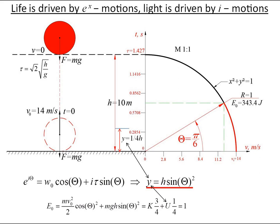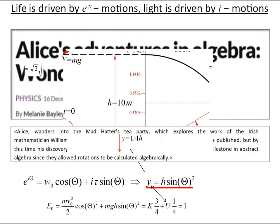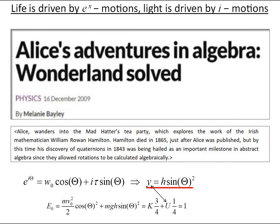From that blog post by Melanie Bailey, 'Alice's Adventures in Algebra Wonderland Solved': Alice wanders into Mad Hatter's tea party, which explores the work of Irish mathematician William Rowan Hamilton. Hamilton died in 1865, just after Alice was published, but by this time his discovery of quaternions in 1843 was being hailed as an important milestone in abstract algebra.